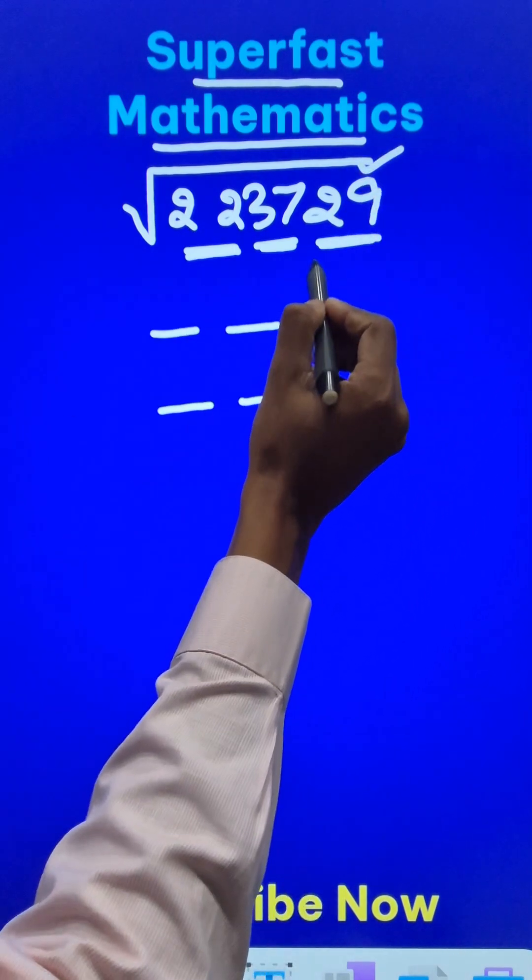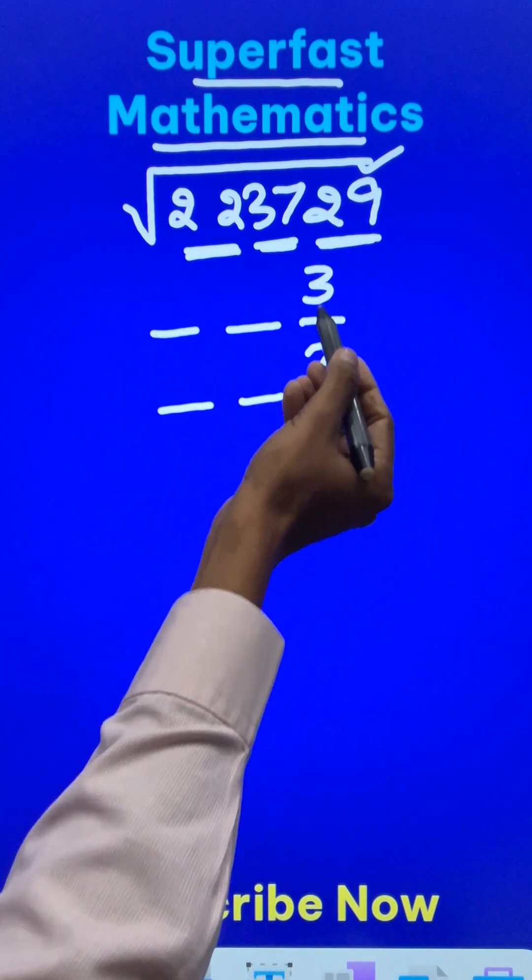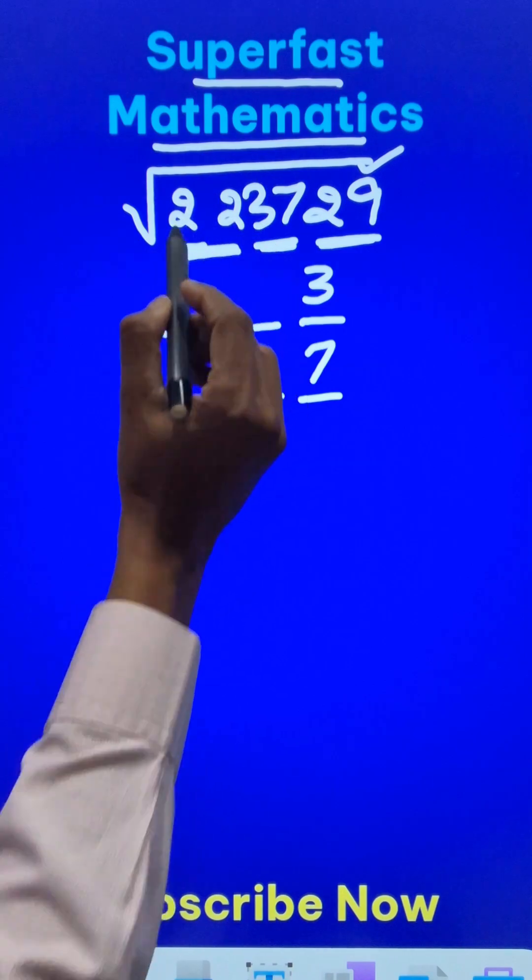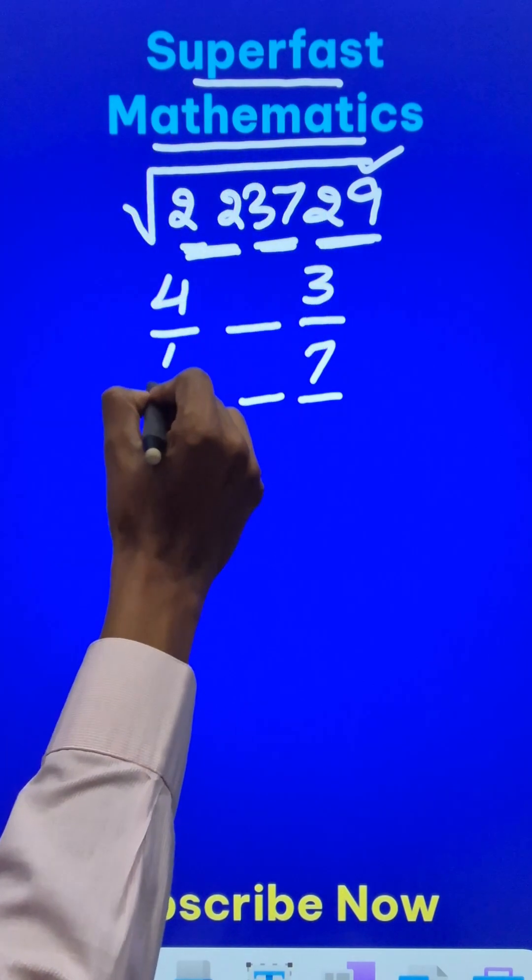The last digit here is 9, so 3 squared is 9 or 7 squared is 49 which ends in 9, so there will only be 2 possibilities. The first pair, 22, is very close to 4 squared which is 16, right? So 4 will be the first digit.